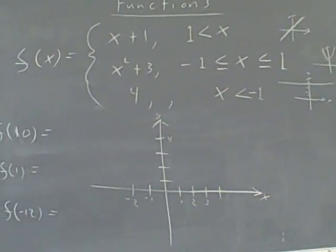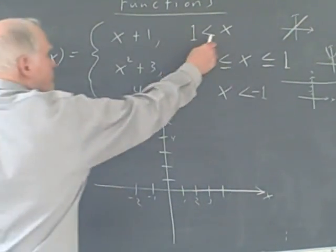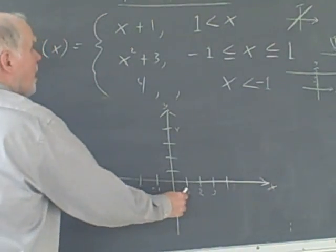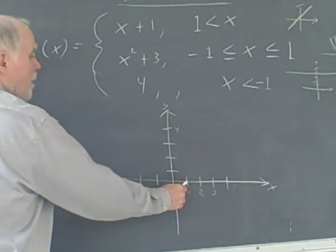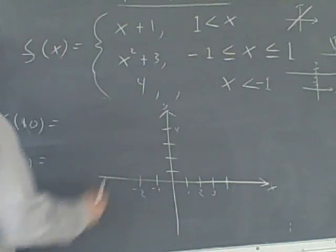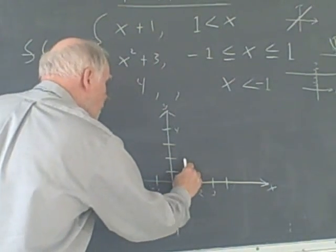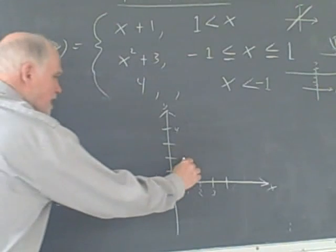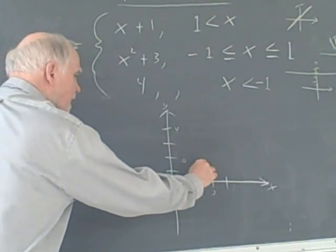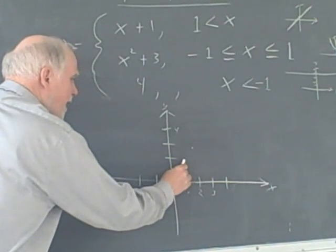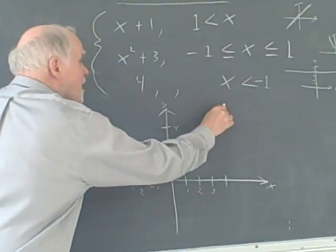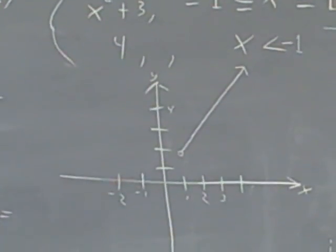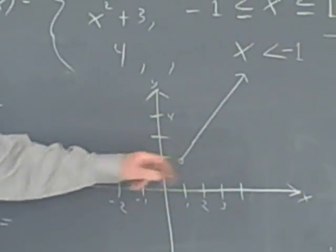So I'll start with x plus 1. We're going to have this line, but it starts at x equals 1, not including 1 — so an open point. I put 1 in and get 2, and since the slope is 1, I go over 1 and up 1. When x is greater than 1, we get this portion of the line, and it stops right there.